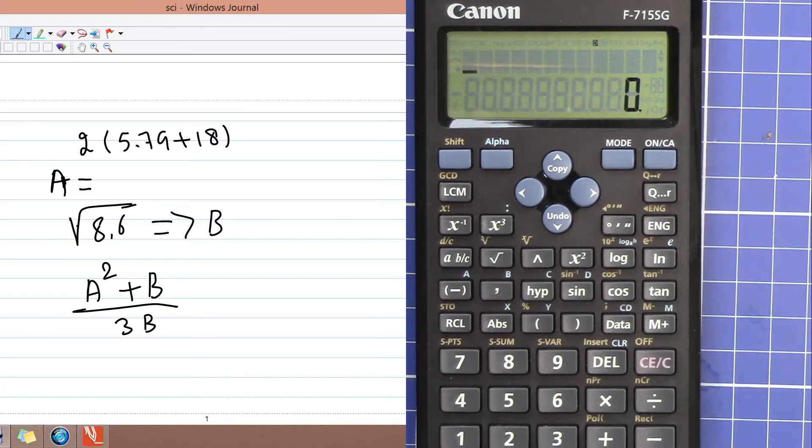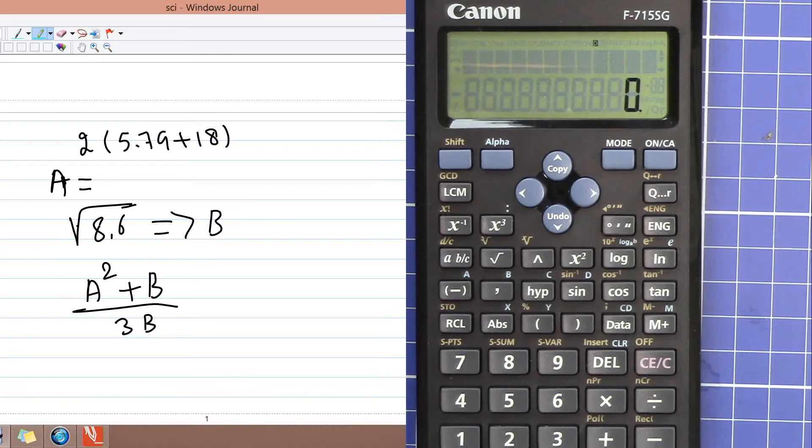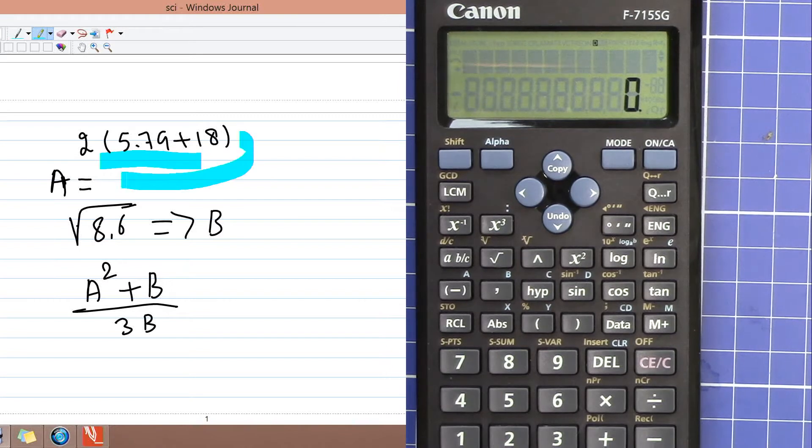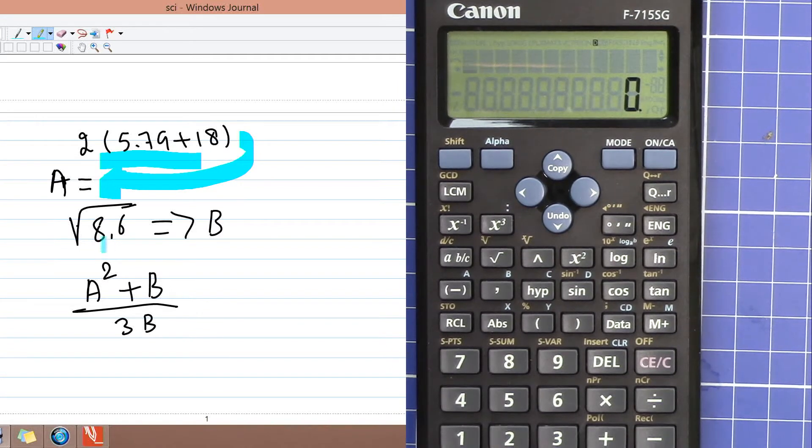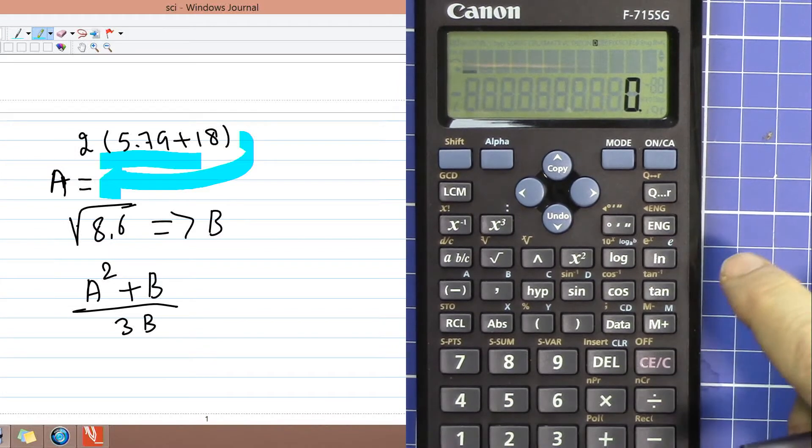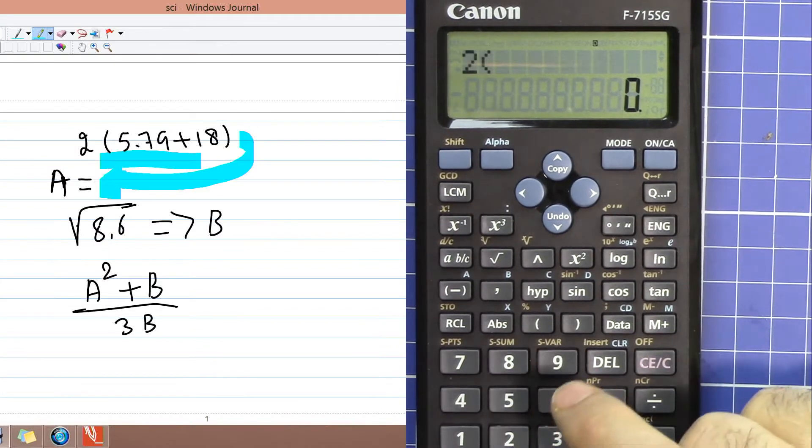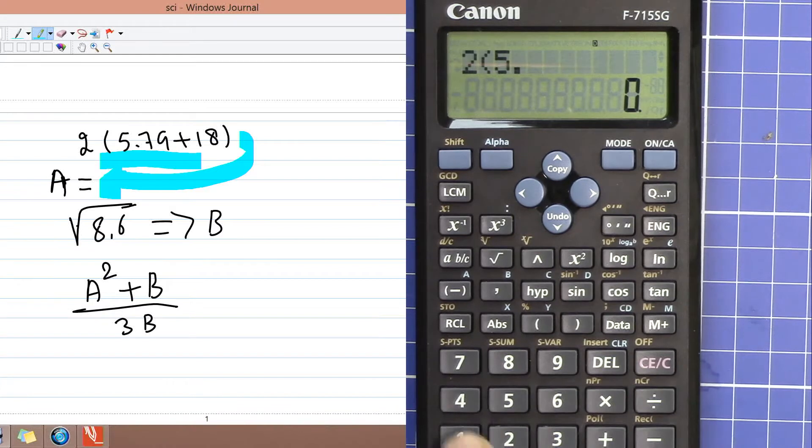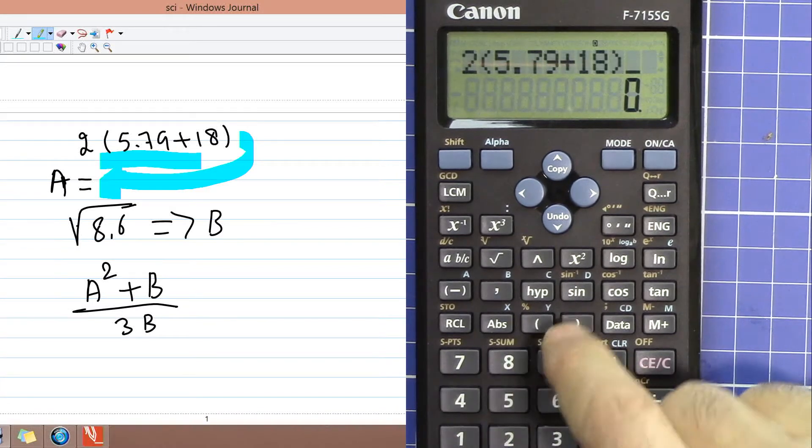Let's say you want to do the calculation 2 times 5.79 plus 18 and then the result you want to put it in memory A. Let's do 2 times, open parenthesis, 5.79 plus 18. Now this is on the screen.